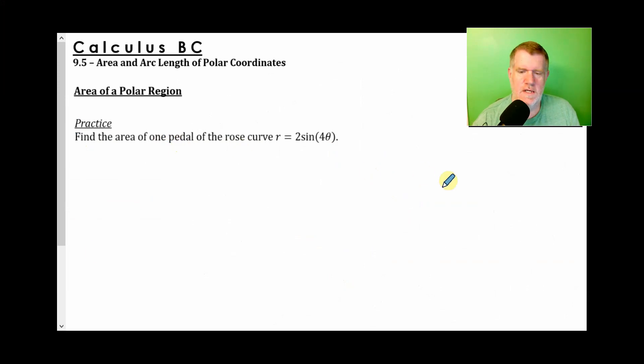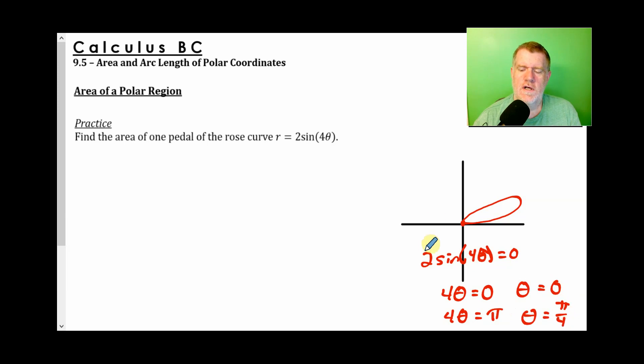We know the petal is going to have a shape of something like this. The question is, where does it begin and how long does it take to get back to the origin? So what I want to know is where does 2 sine of 4 theta equal zero? Sine equals zero at zero, pi, two pi, three pi.